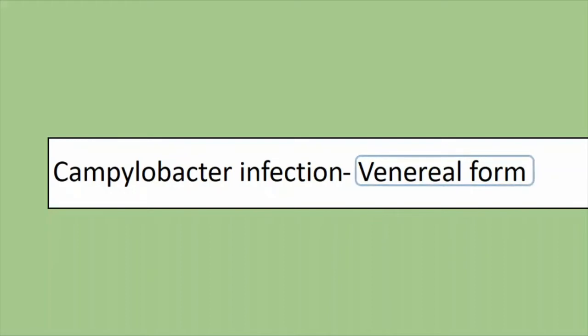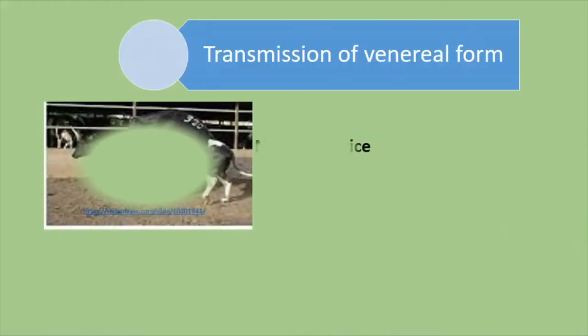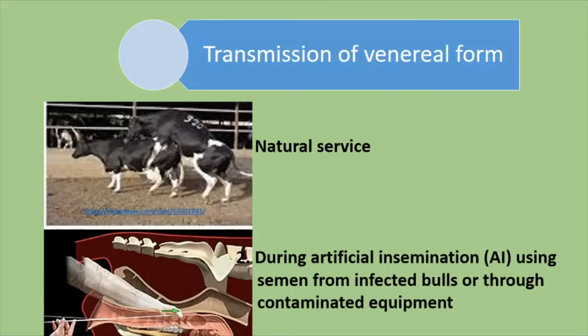In the venereal form, transmission is mainly by natural service — from the bull, the infection gets into the cervix of the cow. Other sources include contaminated instruments used for artificial insemination and even contaminated semen, which are also sources of infection.